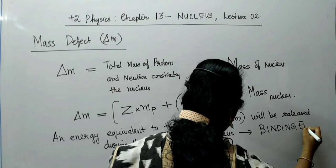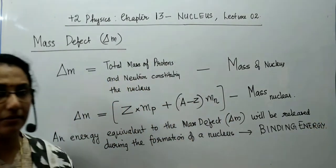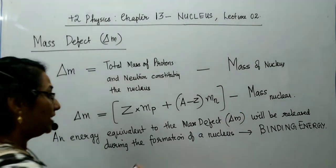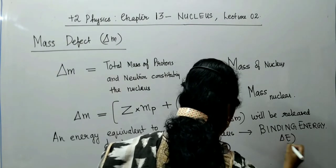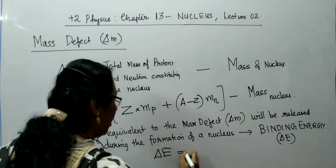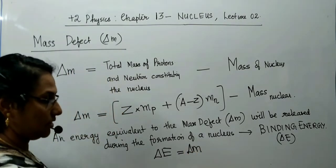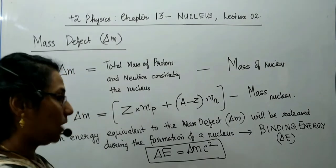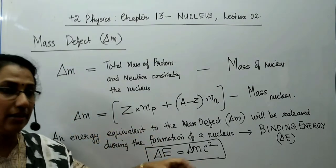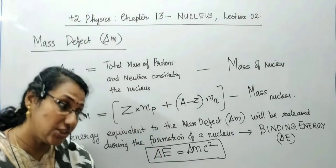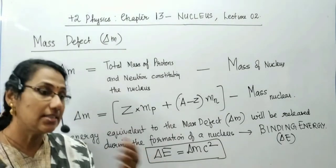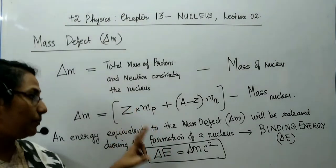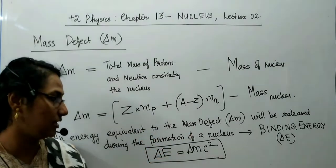So what will be the binding energy? Binding energy ΔE = Δm·c². According to Einstein's equation, if mass is decreased, energy is also decreased. When energy decreases, some energy of the system must be released to the surroundings. The energy released which is equivalent to the mass defect during the formation of the nucleus is called the binding energy.